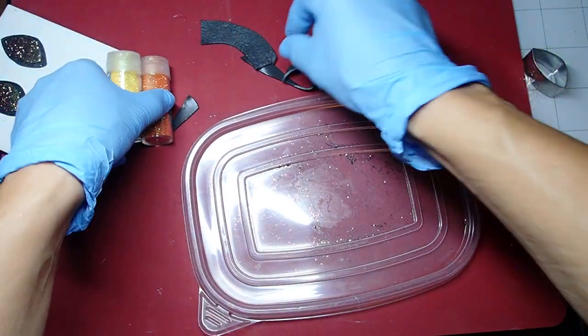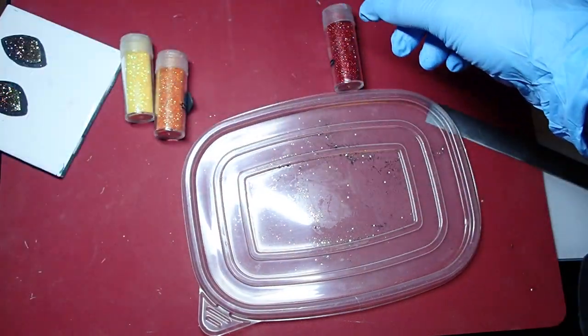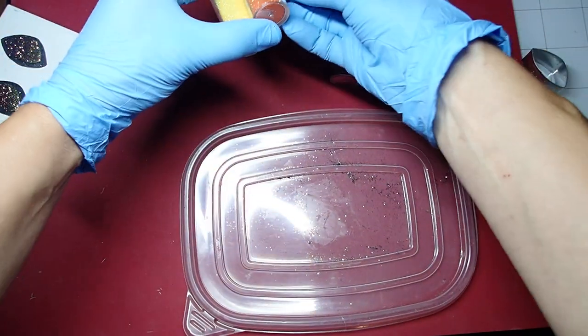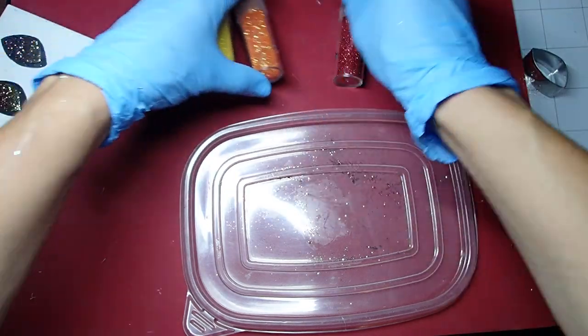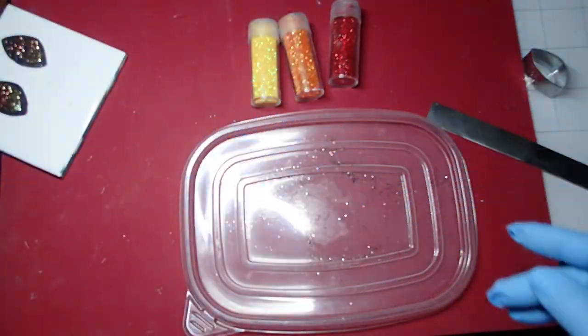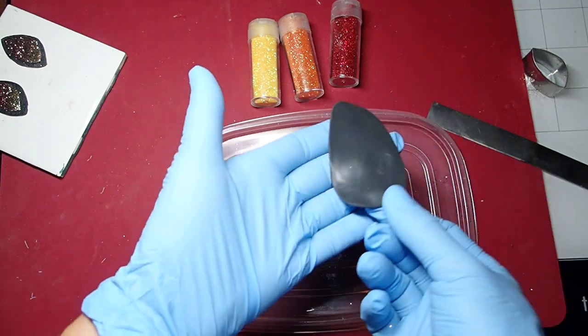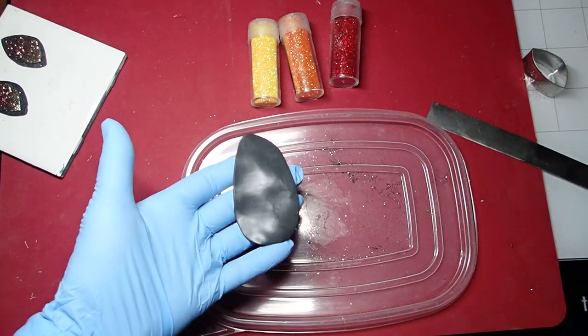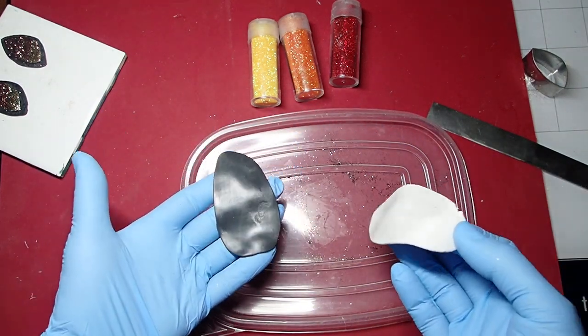I wanted to do like sunset colors. You can see, okay, let's put the black away. So I have the yellow, orange, and red here.